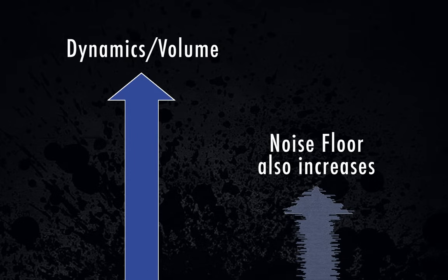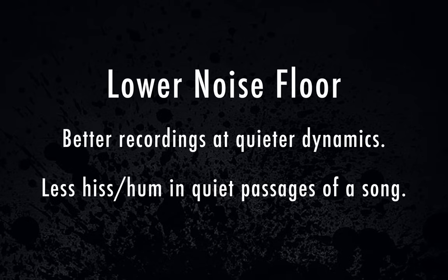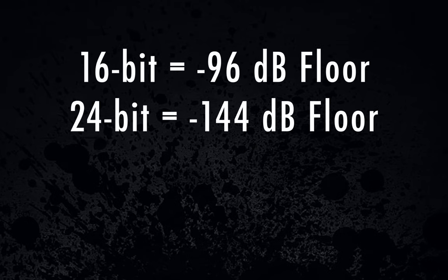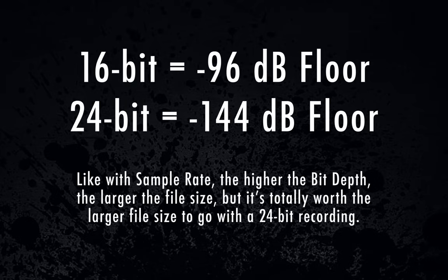Another result of a lower noise floor is the ability to record at quieter dynamics with a cleaner result without hearing hiss in the background — very subtle recordings with really quiet passages like classical music benefit from this. A way to alleviate the hiss is to use a higher bit depth, which lowers the noise floor. At 16-bit your noise floor is at negative 96 dB, and at 24-bit your noise floor is at negative 144 dB. That gives you more range to compress a recording and bump the gain up without noticeably raising the noise floor.